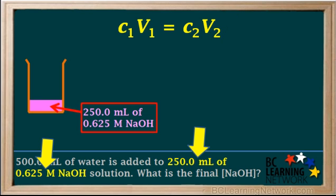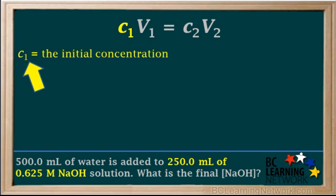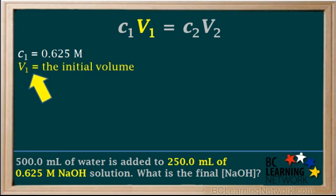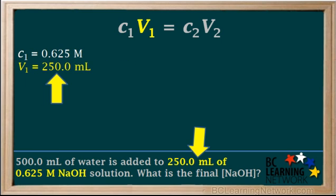The original solution, which we can call solution 1, is 250 mL of 0.625 molar NaOH. So C1, the initial concentration, is equal to 0.625 molar, and V1, the initial volume, is equal to 250 mL.